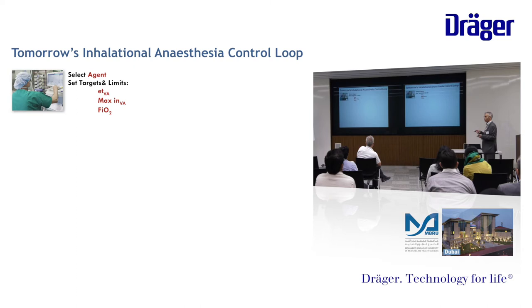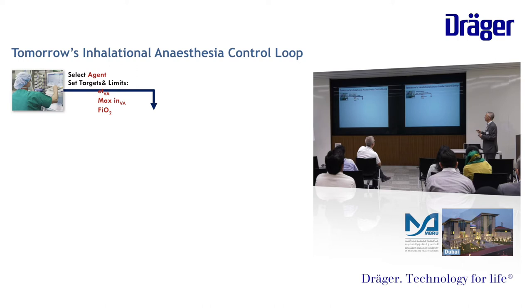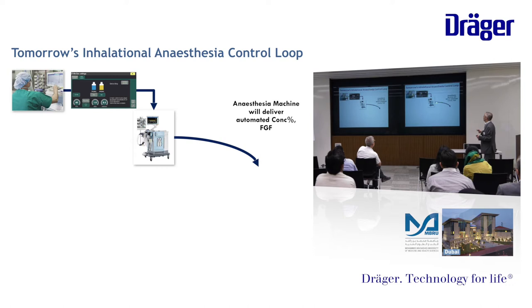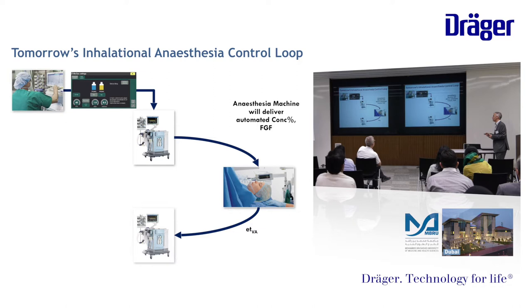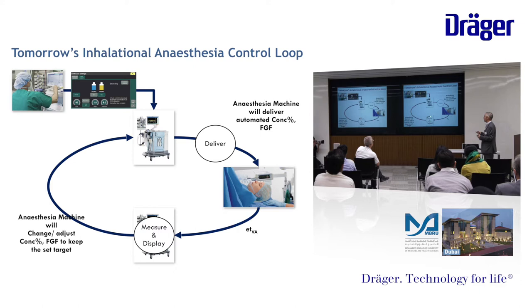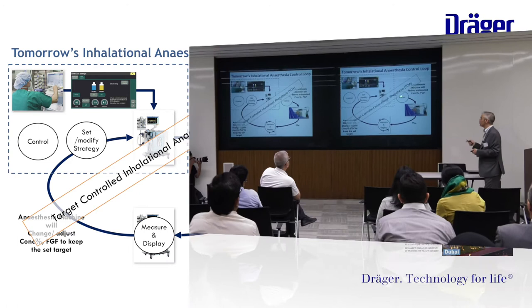Tomorrow's inhalational anesthesia that we are aiming to target: select the agent, select the end-tidal volatile anesthetic that you need, select the maximum inspiratory volatile anesthetic the machine can deliver — which is the maximum allowable — and select your FiO2. And the machine will do it. It will deliver to the patient, the patient will give us the output which is the end-tidal volatile anesthetic, and the machine will react and keep the cycle. So it is delivering, measuring, displaying and taking decisions, while the operator is just controlling and modifying the strategy. This is what is called closed loop control.